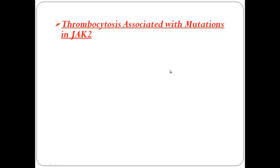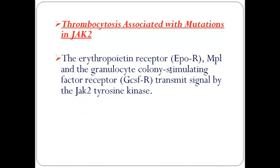Regarding thrombocytosis associated with mutations in JAK2 tyrosine kinase: the erythropoietin receptors, as well as MPL and granulocyte colony-stimulating factor receptors, transmit signals via the JAK2 tyrosine kinase enzyme. Any mutation in the gene encoding this enzyme leads to gain of function, resulting in hyperproliferation of the three corresponding lineages, frequently manifesting as polycythemia vera with erythrocytosis, thrombocytosis, and neutrophilia.